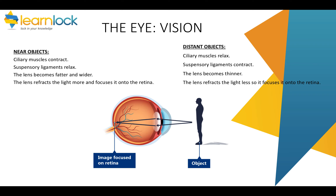So how does the eye change when looking at near and far objects? When looking at something close up, the ciliary muscles contract, the suspensory ligaments slacken or relax, and the lens becomes wider and fatter. The lens then refracts the light more and focuses it onto the back of your eye so you can see clearly. When looking at far away objects, the ciliary muscles relax and the suspensory ligaments contract, so the lens becomes stretched and thinner, refracting the light less and focusing it onto the retina.